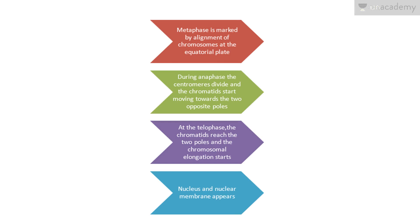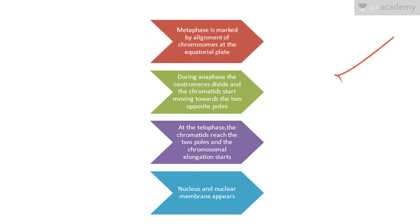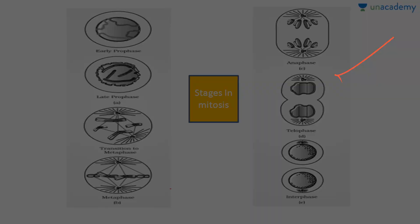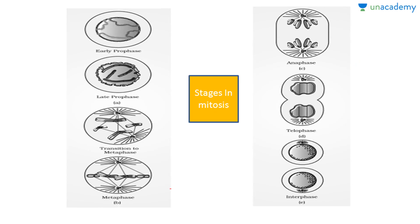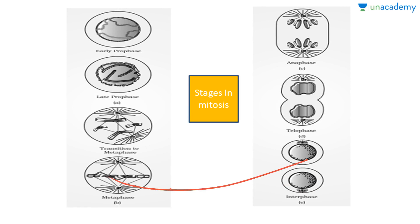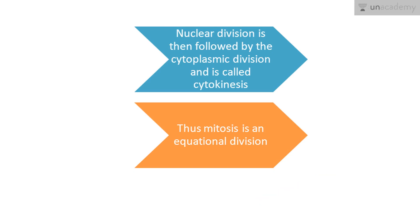Metaphase is marked by alignment of chromosomes at the equatorial plate. During anaphase, the centromeres divide and the chromatids start moving towards the two opposite poles. At telophase, the chromatids reach the two opposite poles, chromosomal elongation starts, and the nucleus and nuclear membrane reappear. You can see all of this in the figure provided — please go through it.